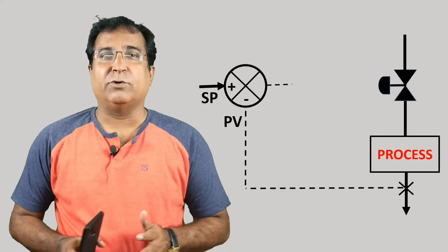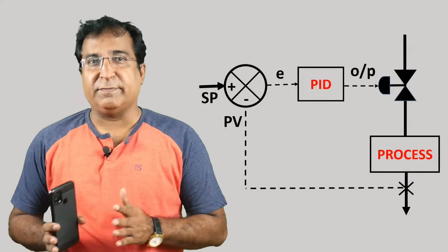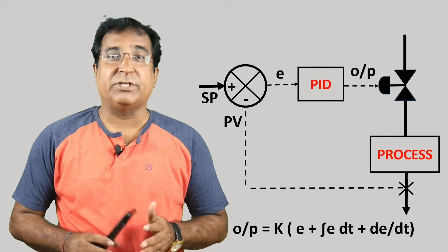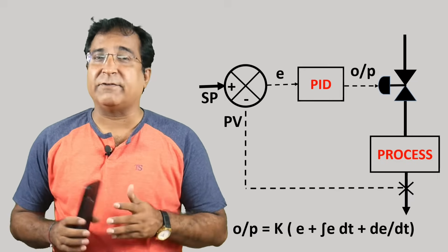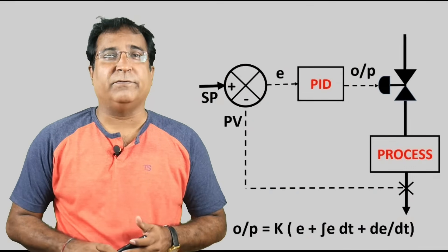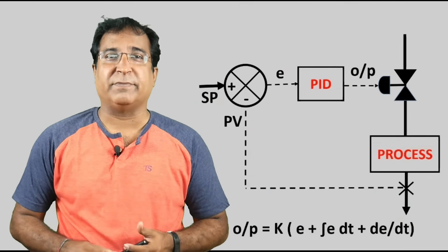Hello friends, PID controller as you know generates a control output based on the error difference between process value and setpoint, which is given by this equation, and drives the final control element - that is your control valve or VFD - to make the process value and setpoint equal.